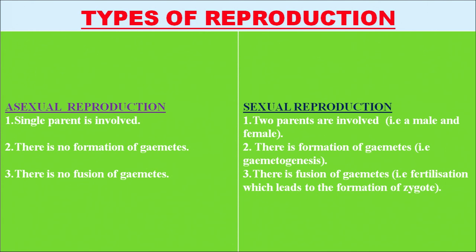Organisms reproduce by two modes: asexual and sexual reproduction. In asexual reproduction, a single parent is involved, but in sexual reproduction there are two parents involved, that is a male and a female. In asexual reproduction there is no formation of gametes, that is there is no gametogenesis, but in sexual reproduction there is formation of gametes, that is gametogenesis is present.